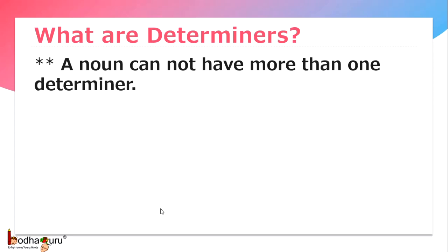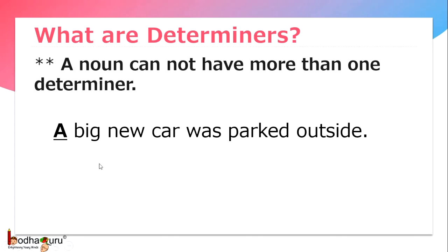Now, if you are confused, another way to think about it is that a noun cannot have more than one determiner. Let's see a few examples. A big new car was parked. 'A' is the determiner, which is an article. 'Big' and 'new' are the adjectives. 'Car' is the noun preceded by three words — 'a', 'big', 'new' — in which case only 'a' is the determiner and 'big' and 'new' are the adjectives.